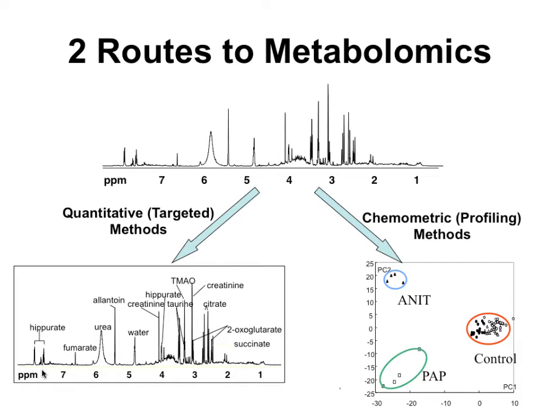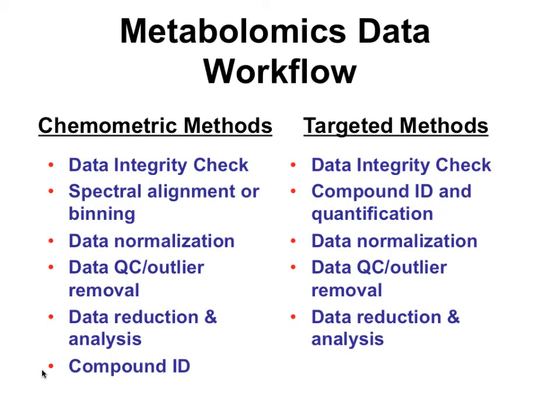Two routes to metabolomics, there are essentially two different workflows depending on what route you've chosen. One, what we've been trying to emphasize is this idea of quantitative targeted metabolomics. The other one that is still widespread is that larger scale chemometric one. So the workflow in the chemometric one is first to collect your data, check it, that's the data integrity check. If you've got a blank sample or blank run or null data, that's not good. If you've got scaling problems or things that have been lost at the tail end of the run, that's not good. So you're checking that.